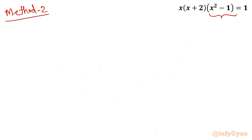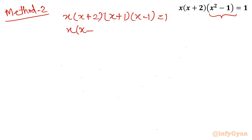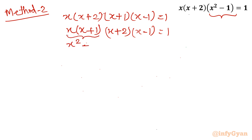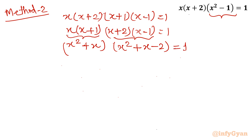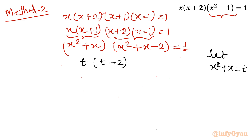I will write the difference of two squares first: x times (x plus 2) times (x plus 1)(x minus 1) equal to 1. Let us consider x and (x plus 1) together, writing it as x(x plus 1) times (x plus 2)(x minus 1) equal to 1. Expanding these two terms: x squared plus x, and for the last two terms x squared plus 2x minus x plus x minus 2, equal to 1. We can see that if I give the substitution x squared plus x equal to t, then the second bracket is t minus 2 equal to 1.